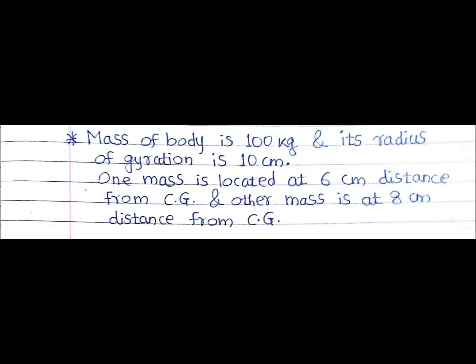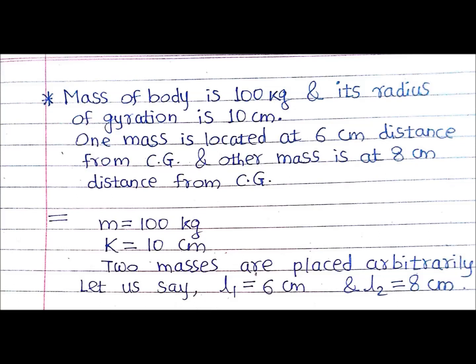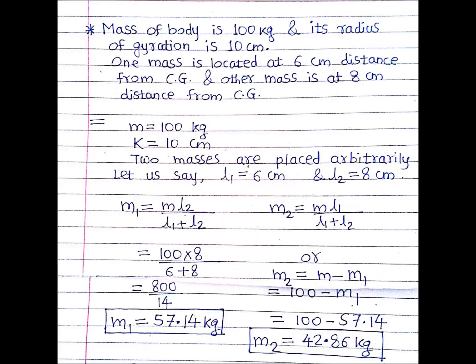Now we discuss a second numerical. Given: mass of body is 100 kg, radius of gyration is 10 cm. In the two-mass system, one mass is at 6 cm from CG and the other is at 8 cm from CG — so L1 equals 6 cm and L2 equals 8 cm. Since L1, L2, and total mass are known, we find M1 equals 57.14 kg and M2 equals 42.86 kg.